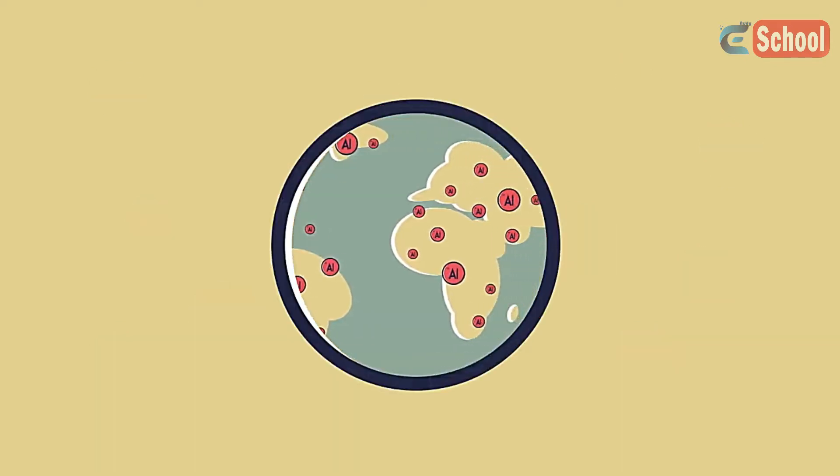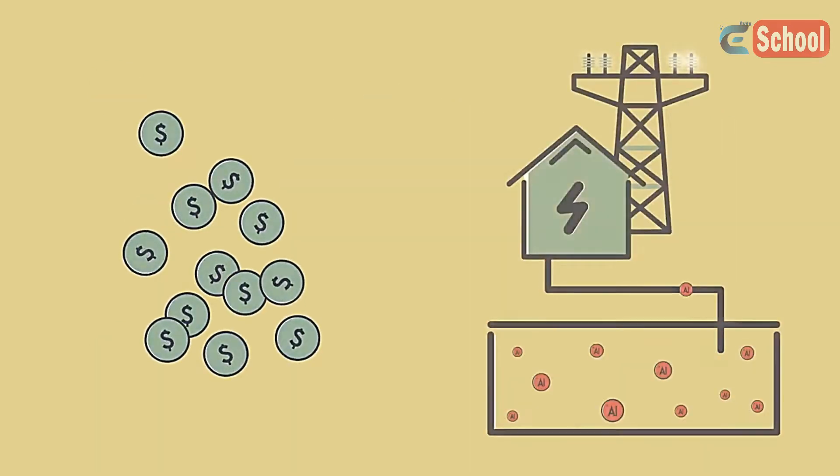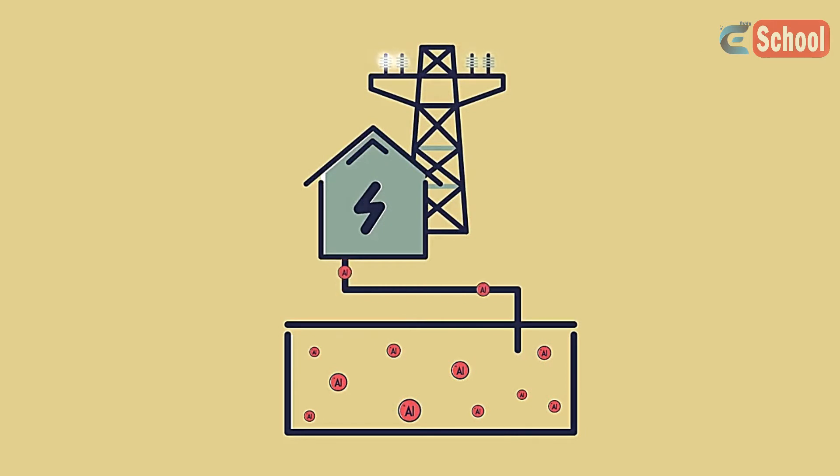Aluminium is the most abundant metal on earth. However, it is expensive because a lot of electricity is used to extract it.